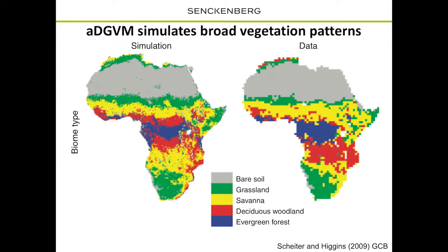We started a few years ago in Africa, mainly interested in simulating the occurrence of savannahs. We simulated biomes — grassland, savannah, deciduous woodlands, and evergreen forests — and compared them to observed biomes. What we could show in this study is that we achieved quite good agreement between these different vegetation types.